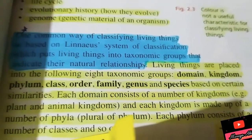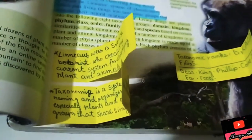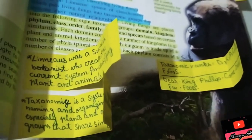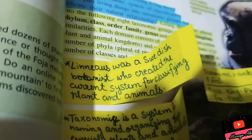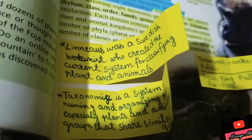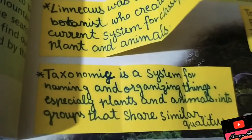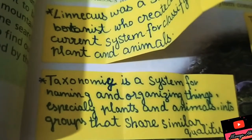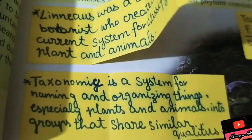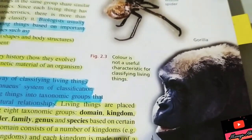One common way of classifying living things is based on the Linnaean system. Linnaeus was a scientist — a serious botanist — who created the grand system for classifying plants and animals. What is taxonomy? Taxonomy is a system for naming and organizing living things, especially plants and animals, into groups that share similar qualities.